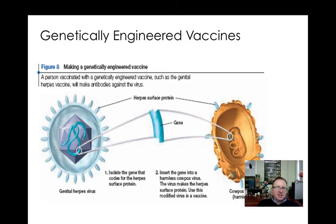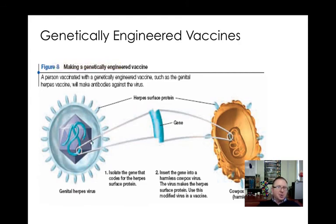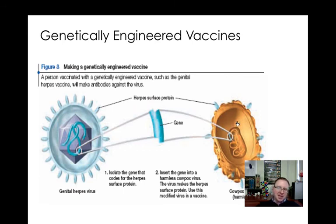With a genetically engineered vaccine, generally speaking, a surface protein gene from the pathogen we want to vaccinate against is moved into a harmless vector. Because that vector is normally harmless to us, our immune system can identify it, finds it's not a threat, and therefore antibodies can be produced against the surface protein without causing disease. For example, with the genital herpes virus, scientists isolate the gene that codes for the herpes surface proteins — the surface proteins that signal the immune system to respond. This is cut out using a restriction enzyme, just like in genetic engineering, and that surface protein gene is moved into the harmless cowpox virus genome. It produces the surface protein so the immune system recognizes and produces antibodies against it, but it does not cause disease.